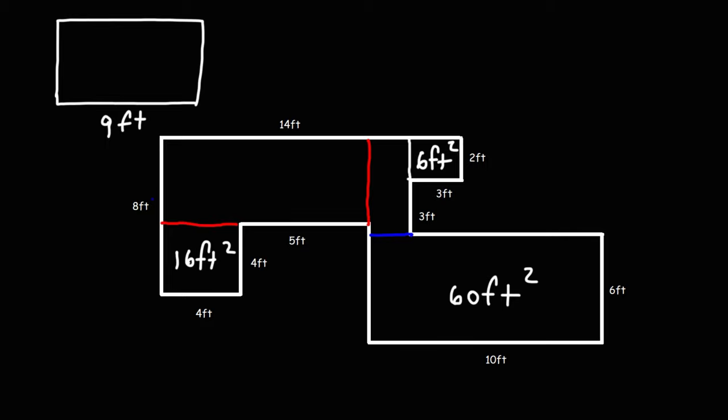Now the next thing that we need is the width of this section. This entire distance spans 8 feet. And this portion here is 4 feet. So the difference between 8 and 4 will give us the width of the rectangle under consideration. And that's going to be 4 feet. So 4 times 9 gives us an area of 36 square feet.